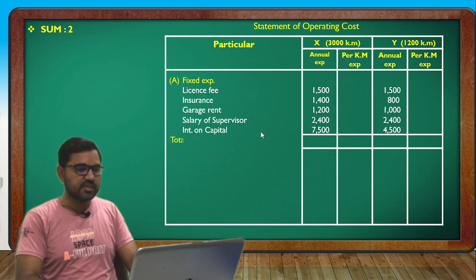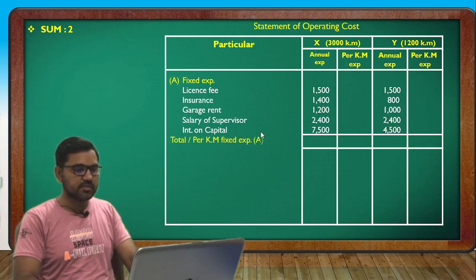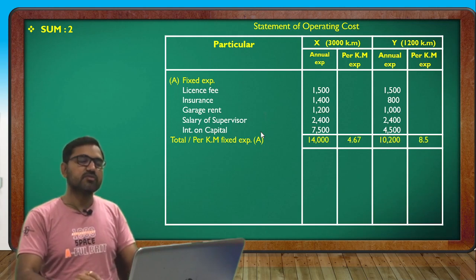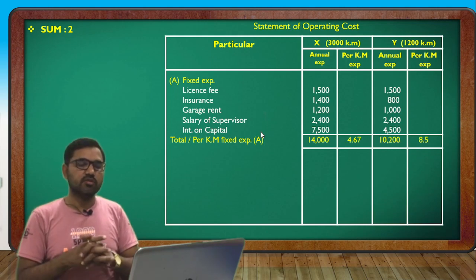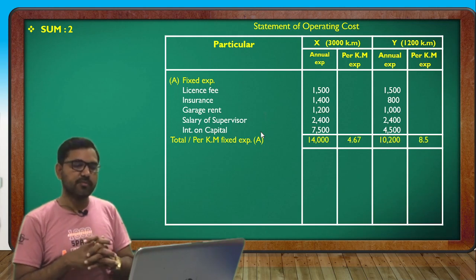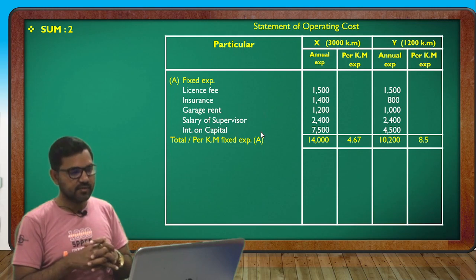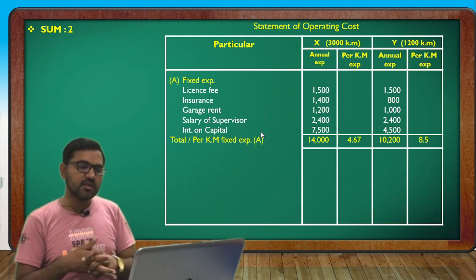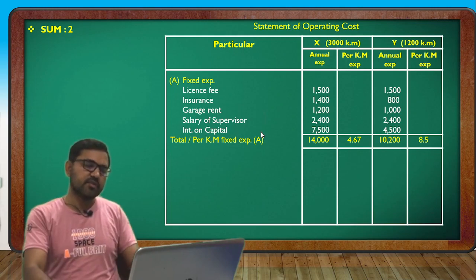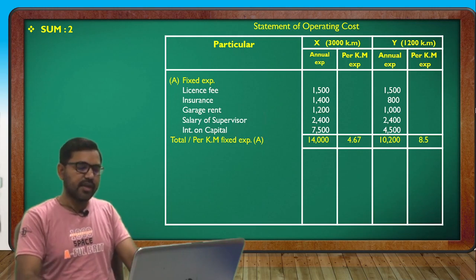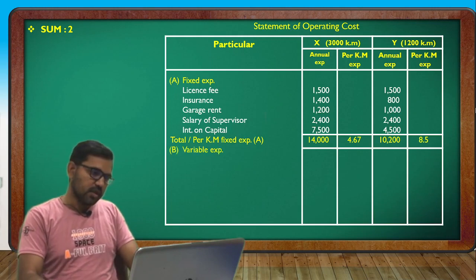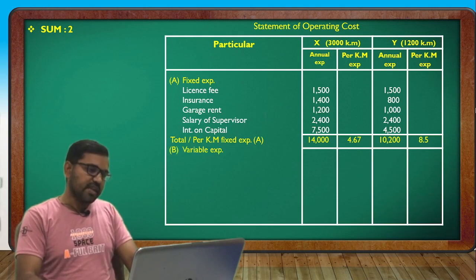Total fixed expense for X is 14,000; divided by 3,000 km gives 4.67 per km. For Y, total fixed expense is 10,200; divided by km gives 8.50 per km.